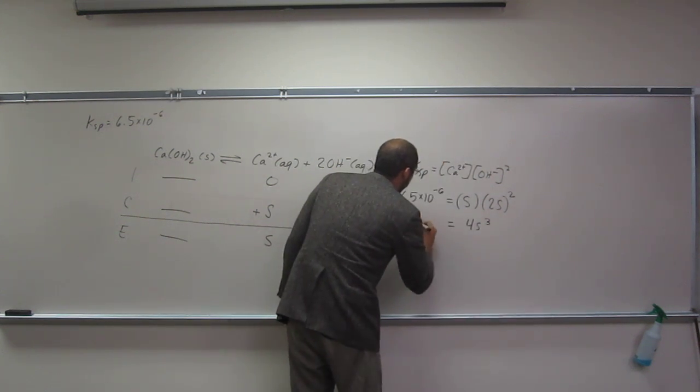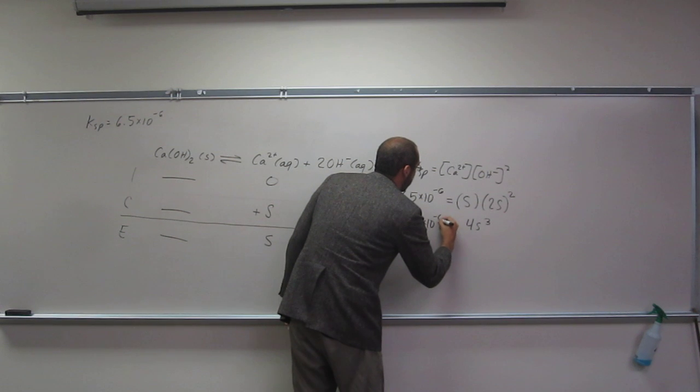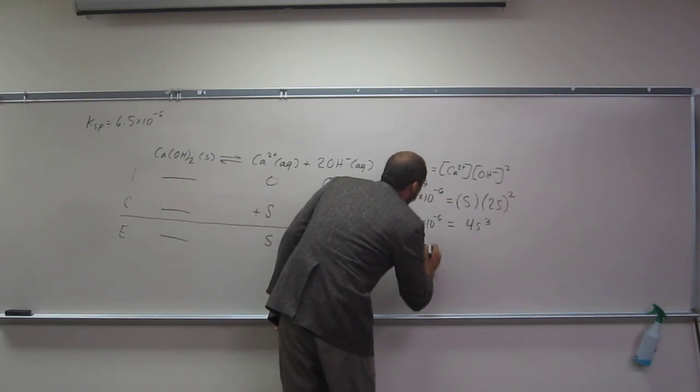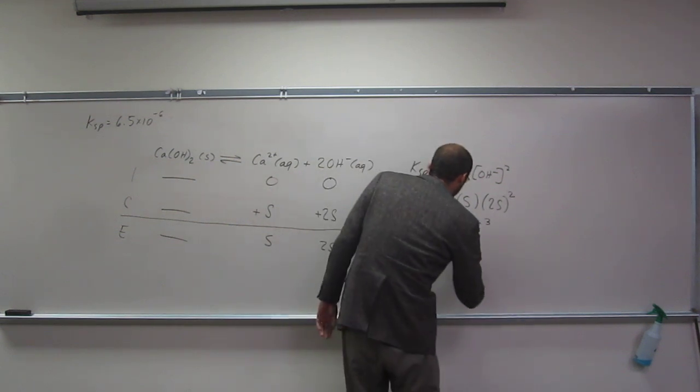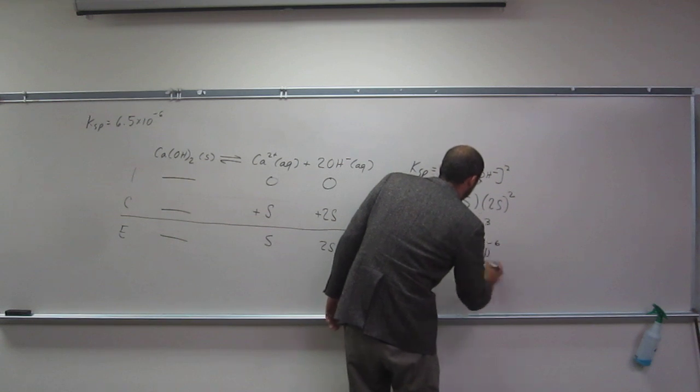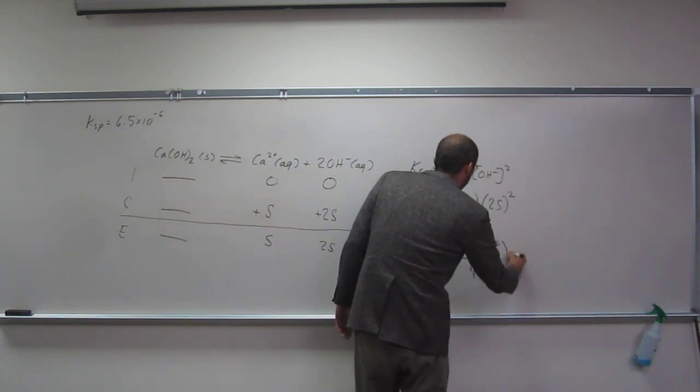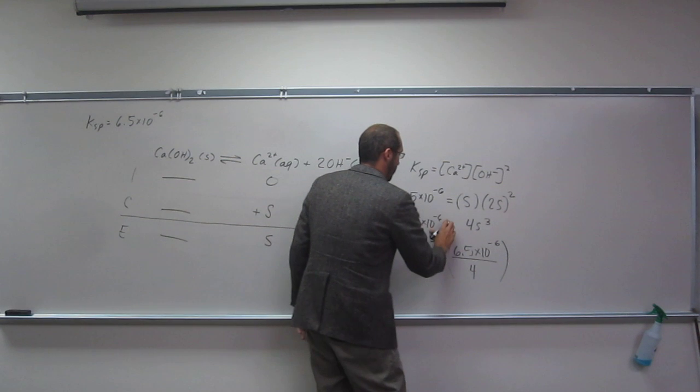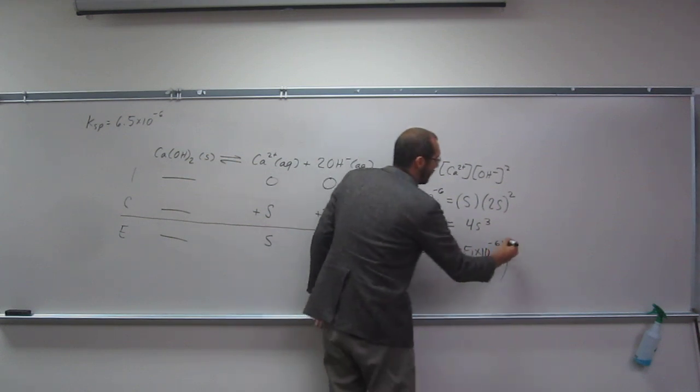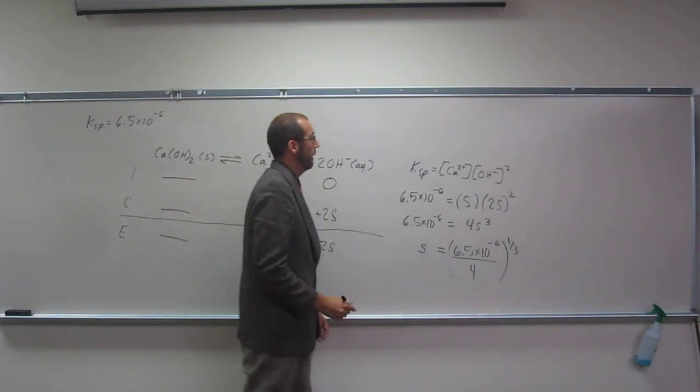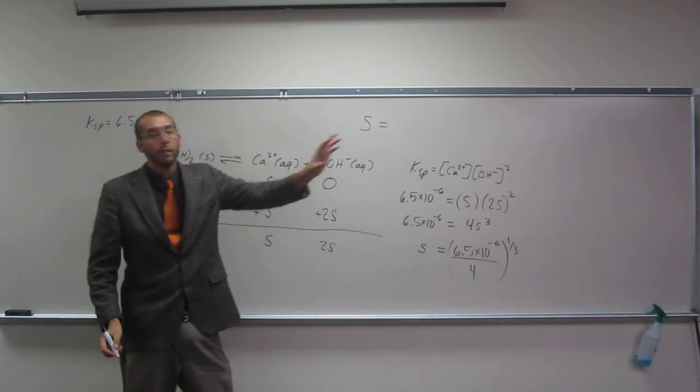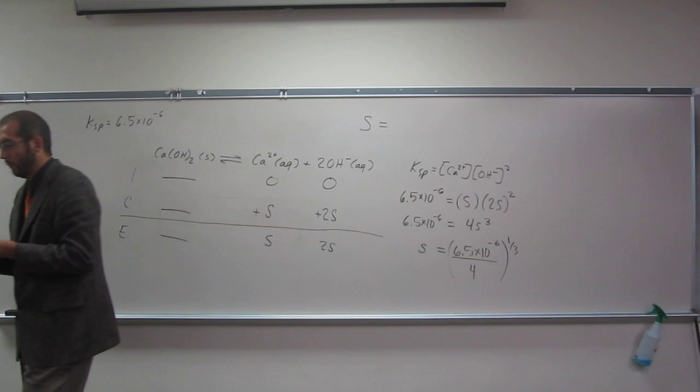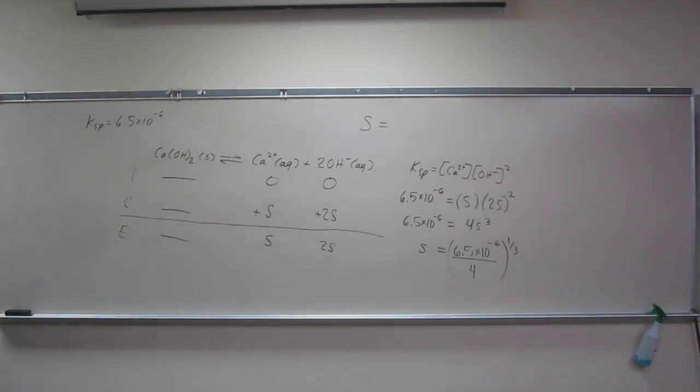So S cubed equals 6.5 times 10 to the negative 6 divided by 4. And so S equals that to the 1 third. So S is the solubility. That's what we're looking for.